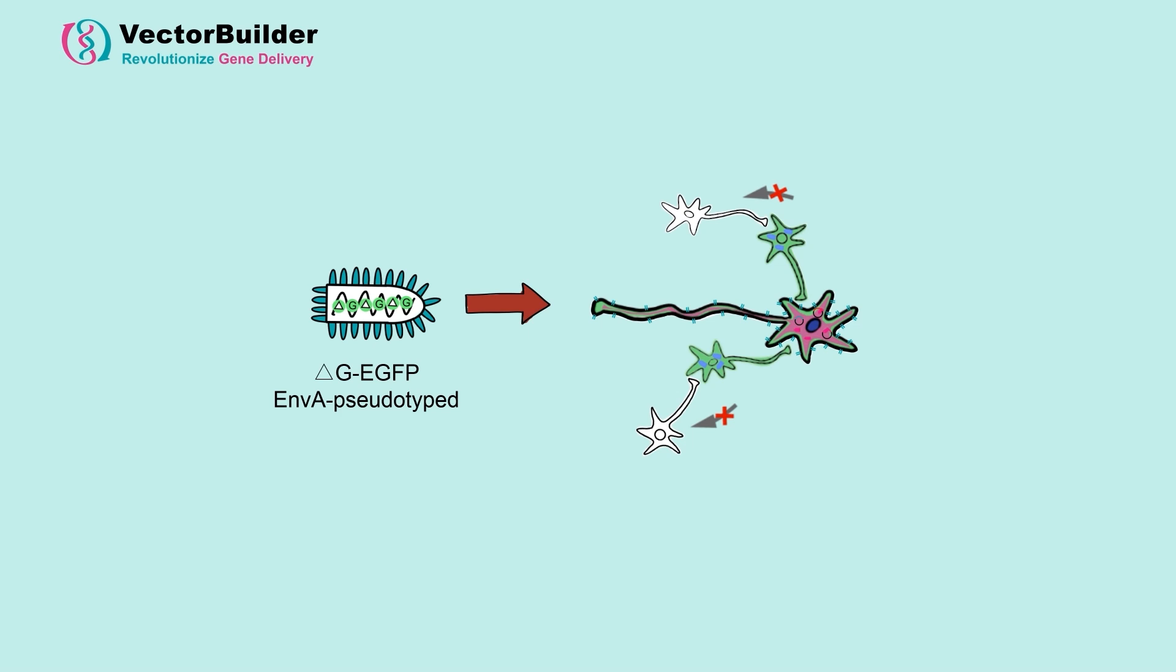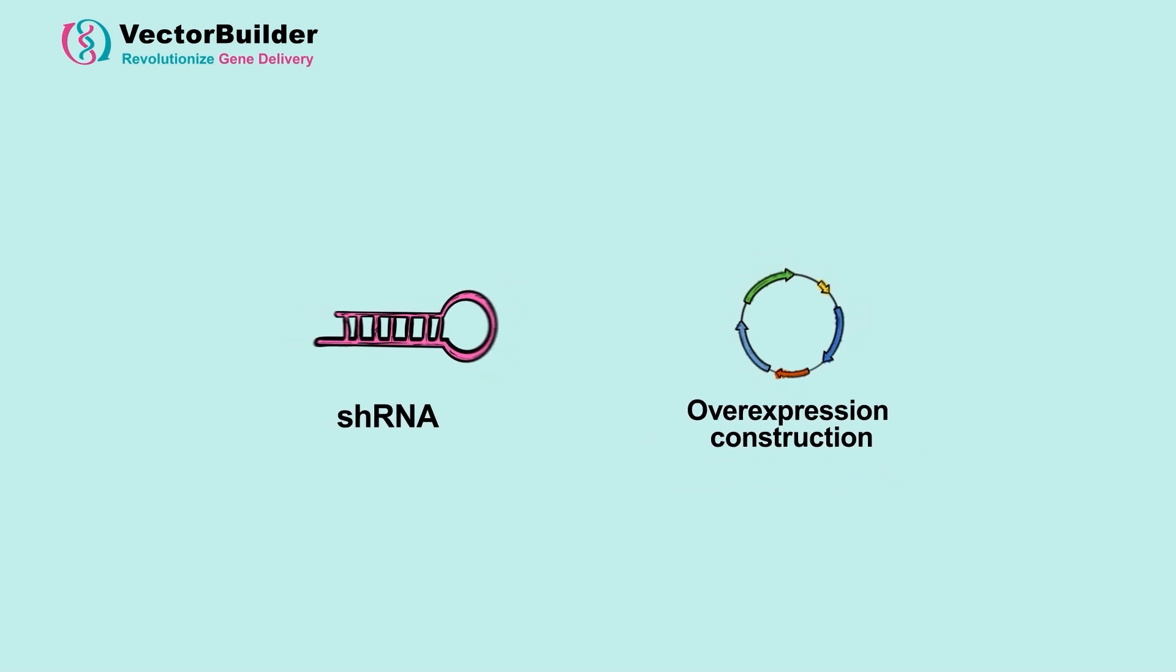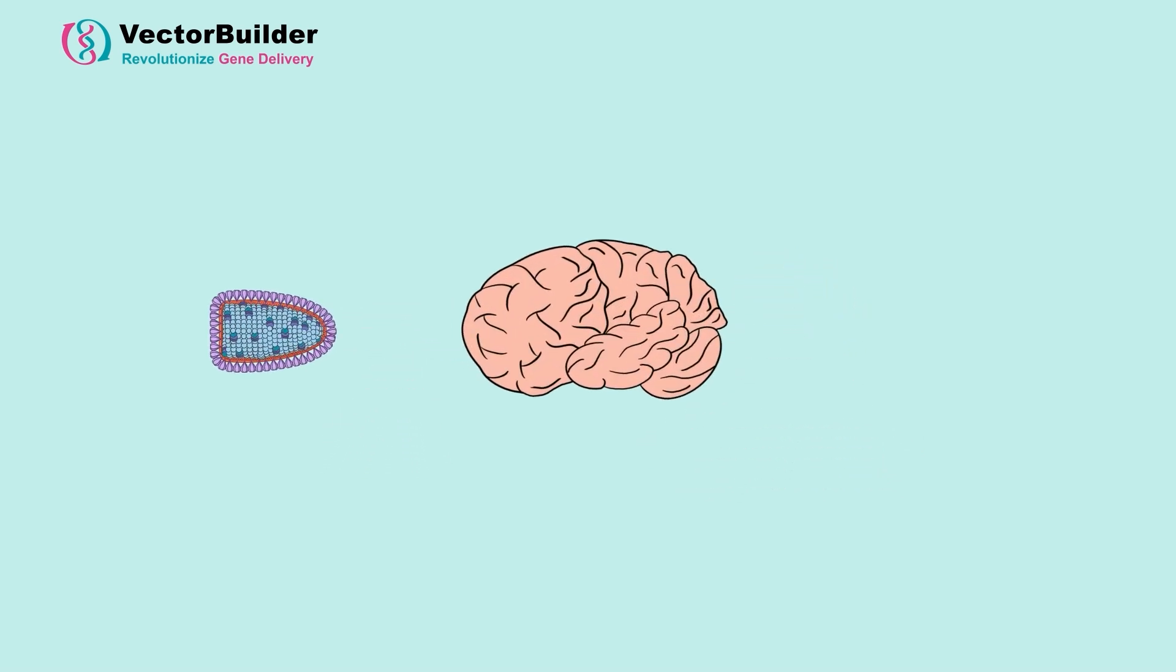Now we have a detailed view of this part of this neural network, when we can not only label, but also modify the synapse using shRNA and overexpression constructs. Recombinant rabies virus has become an invaluable tool for appreciating both structural and functional relationships within the brain.